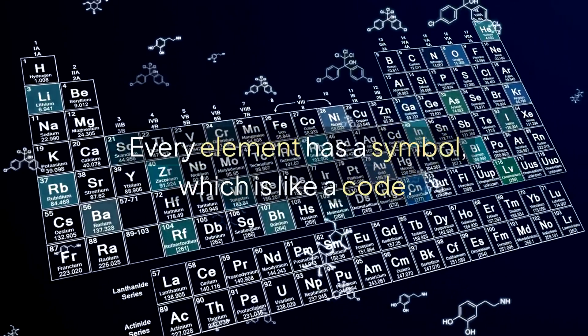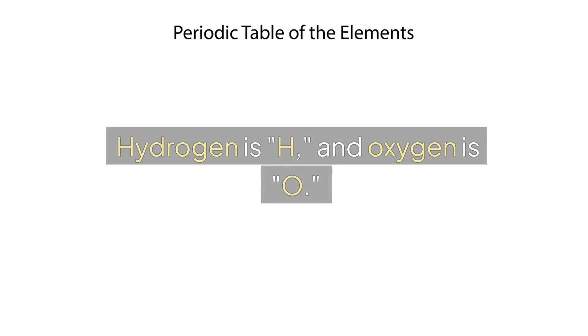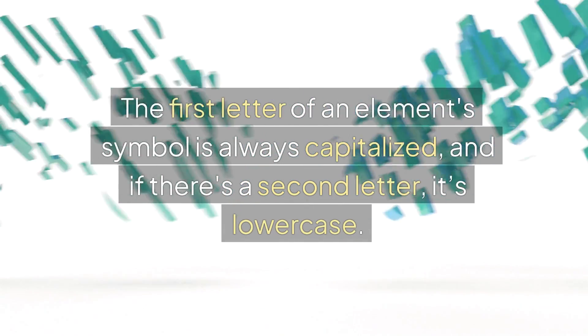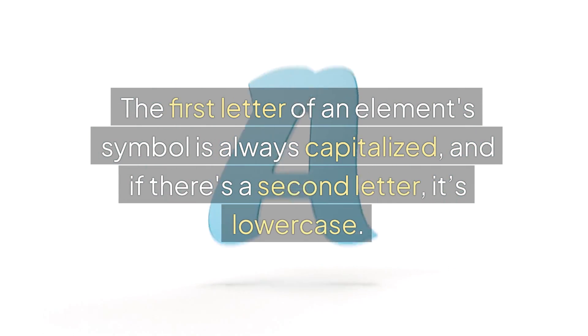Every element has a symbol which is like a code. Hydrogen is H, and oxygen is O. The first letter of an element's symbol is always capitalized, and if there's a second letter, it's lowercase.